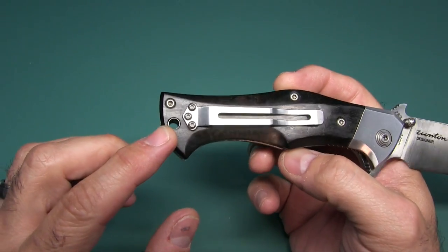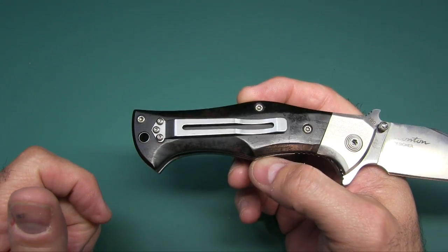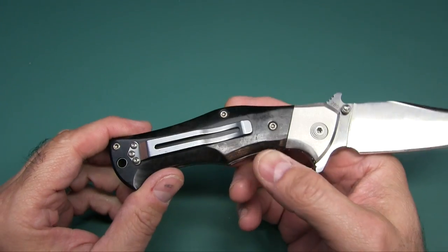You can see it has a lanyard hole. There's a steel lanyard in there. You have a nice clip. That clip can't be moved. That's right-handed, tip-up only. So if that's an issue for you, you can leave right now.